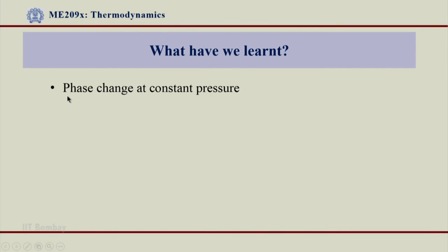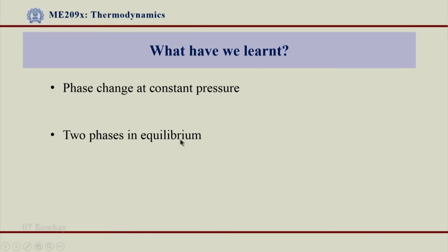So what have we learned? We saw the phase change process carried out at constant atmospheric pressure through an animated experiment. We also saw two phases in equilibrium and understood the F and G subscript properties — Uf, Ug, Sf, Sg, Hf, Hg, etc. Then we saw how to read properties from steam tables, which are the properties we will use for further calculations. Thank you very much.